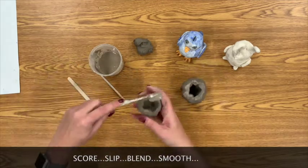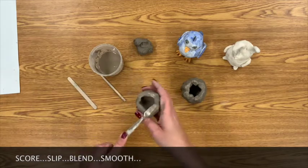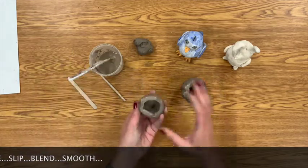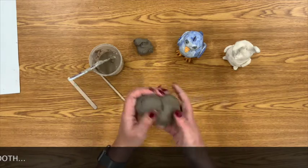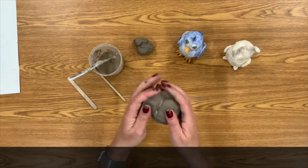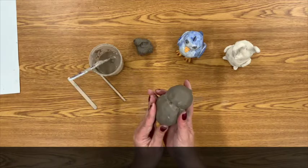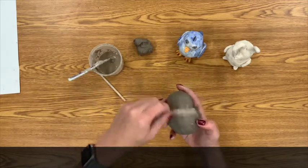Now you may notice that I'm using a toothbrush. That's because the bristles of the toothbrush kind of do the scoring and slipping at the same time. The bristles are going to scratch up the clay, which is scoring, and then it's going to help apply the slip, which is just clay mixed with water, and it works kind of like glue.